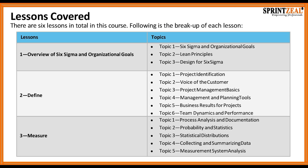There are six lessons in total within this course. It begins with an overview of Six Sigma and Organizational Goals, where we'll talk about Six Sigma organizational goals, some Lean principles, and design for Six Sigma.